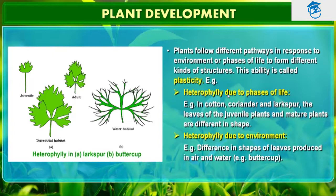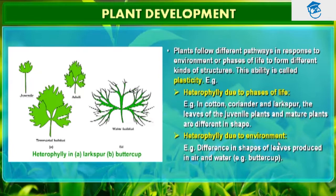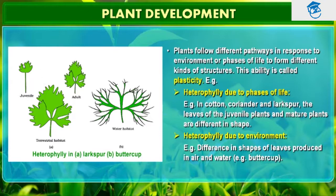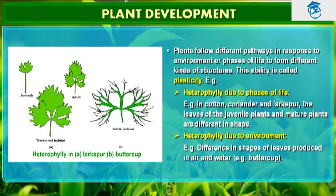Heterophylly due to phases of life and heterophylly due to environment — heterophylly in cotton, coriander, and larkspore are examples of plasticity. In such plants, the leaves of the juvenile plant are different in shape from those in mature plants. This is the juvenile plant which is different in structure, and this is the adult plant which is different in structure. This is a terrestrial habitat plant, and this is a water habitat plant — clearly showing heterophylly, that means plasticity.